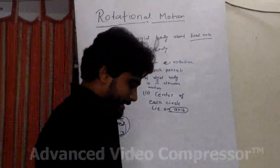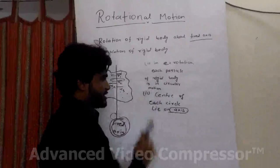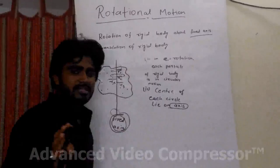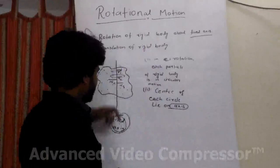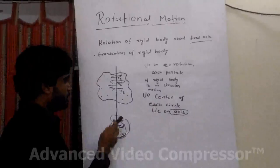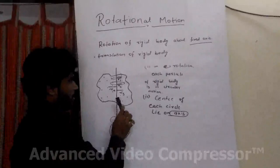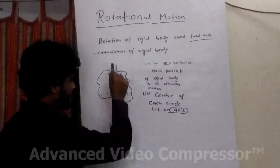If I say that a body is rotating about a fixed axis, what does it mean? It explains several things. First, in rotational motion, if a body is rotating about a fixed axis, it means each particle of the rigid body is in circular motion. As you know, in every rigid body there are millions and trillions of particles, and each particle is in circular motion. The center of each circular path lies on the fixed axis, which does not change during motion.